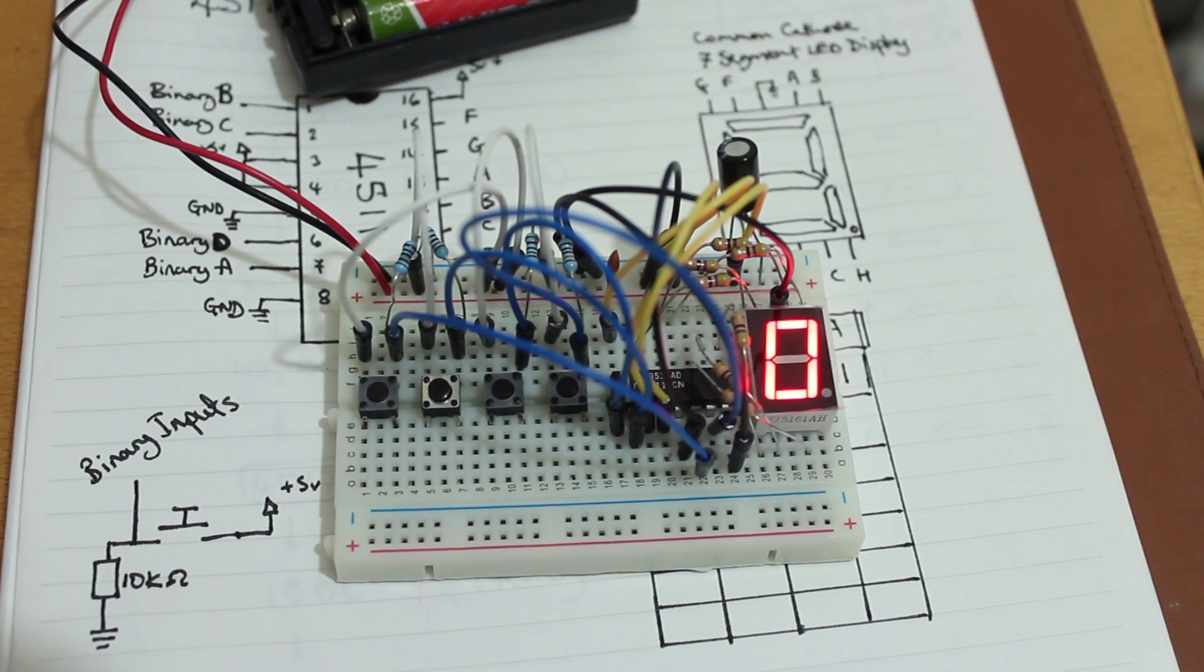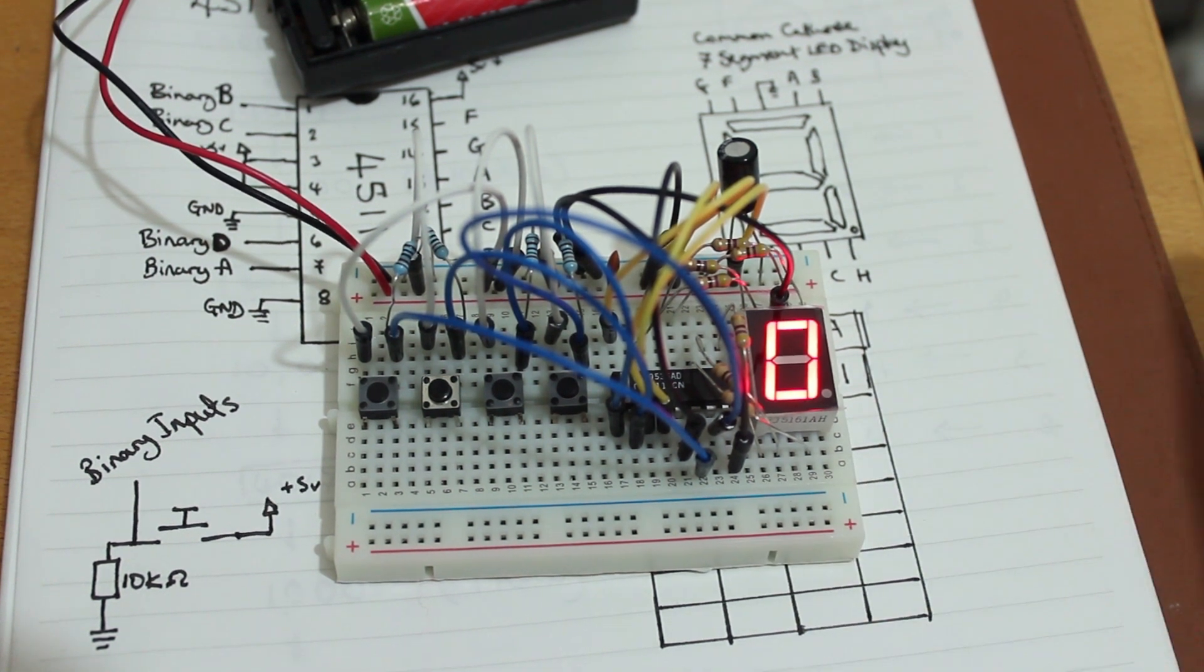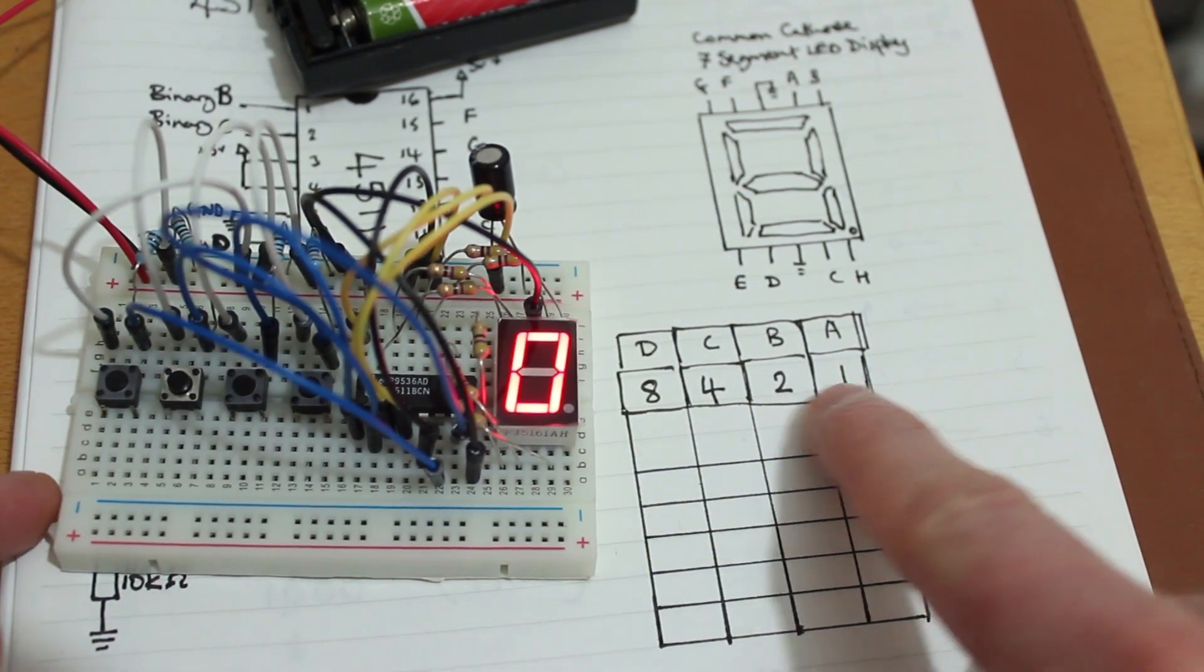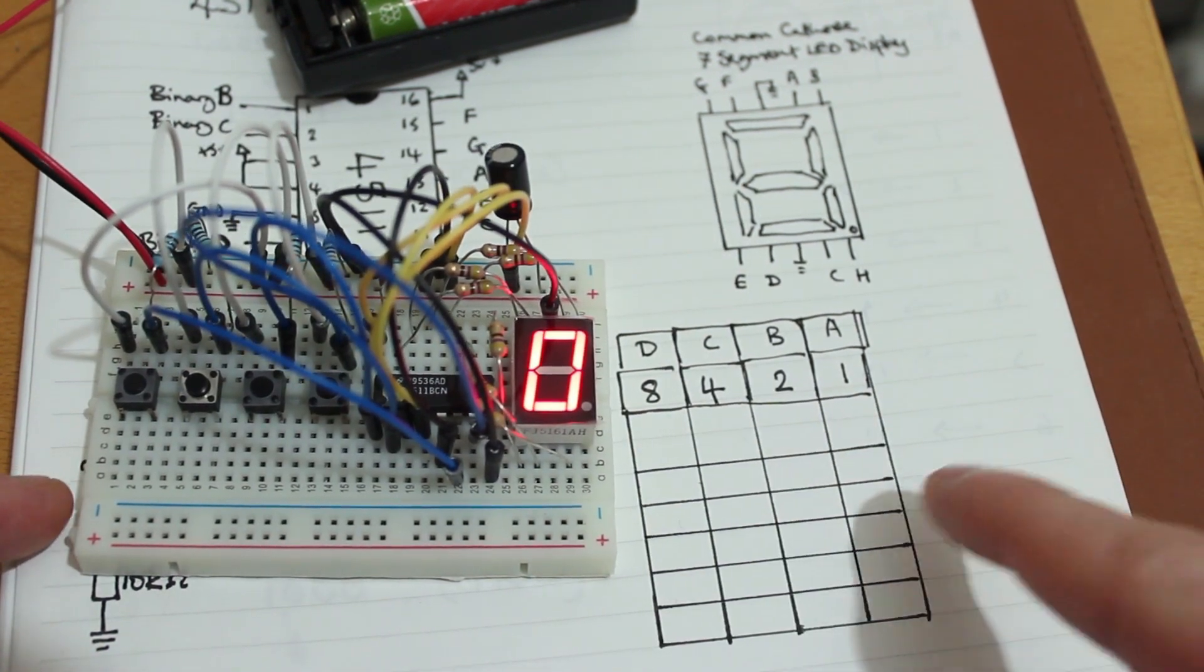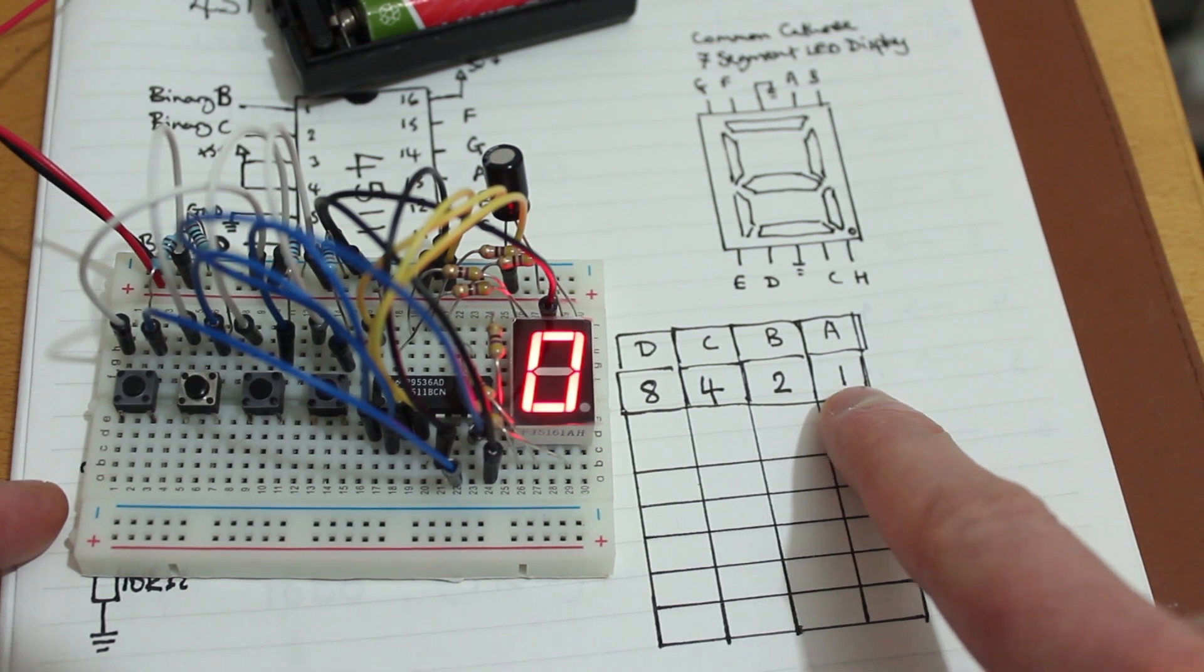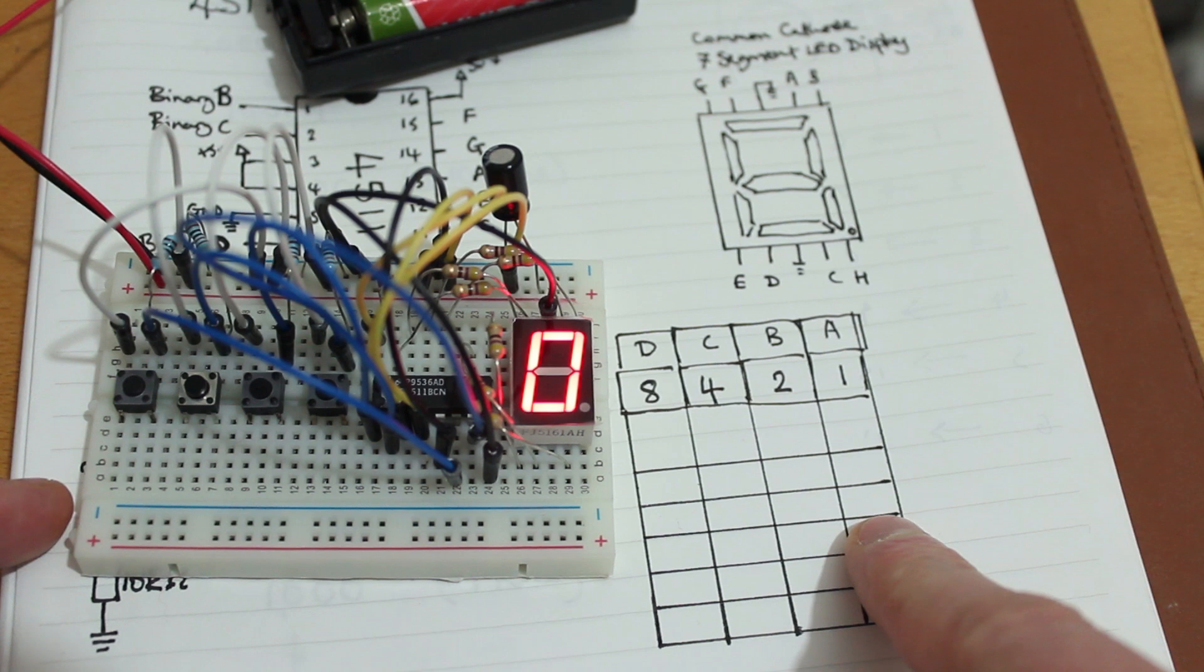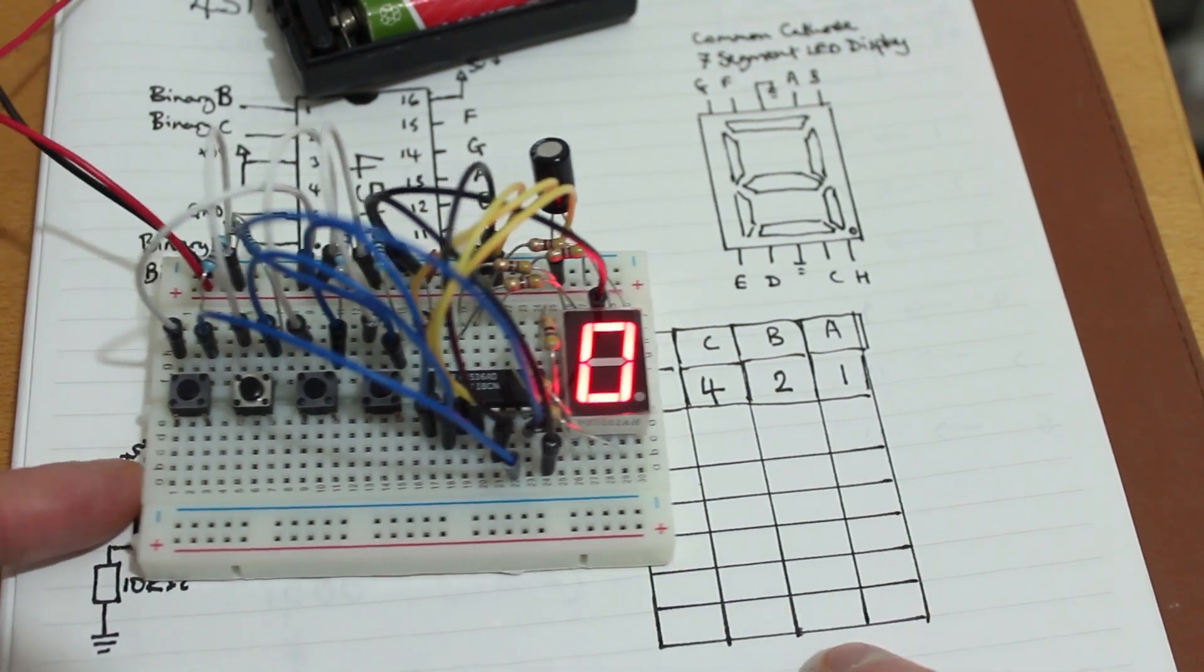Now this is a BCD to 7 segment IC driver, but actually it's a binary coded decimal. So that means that you have these binary numbers that you throw in there. So it's 4 bit binary, which means that you can have 1, 2, 4 and 8. And that's a maximum of what? Is that 15? But actually this only counts up to 9.